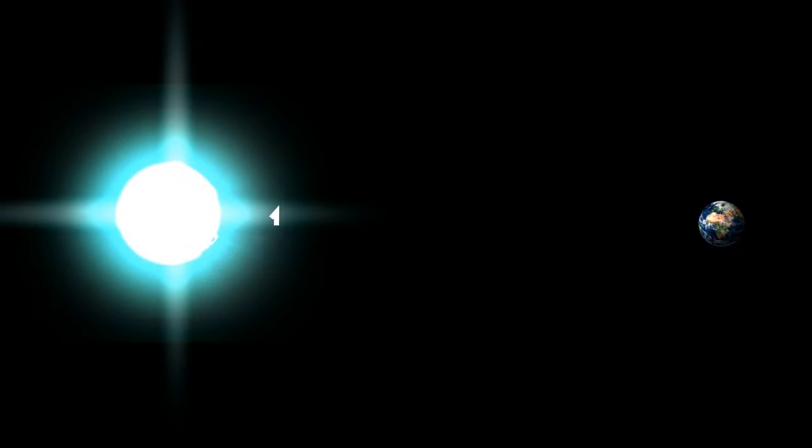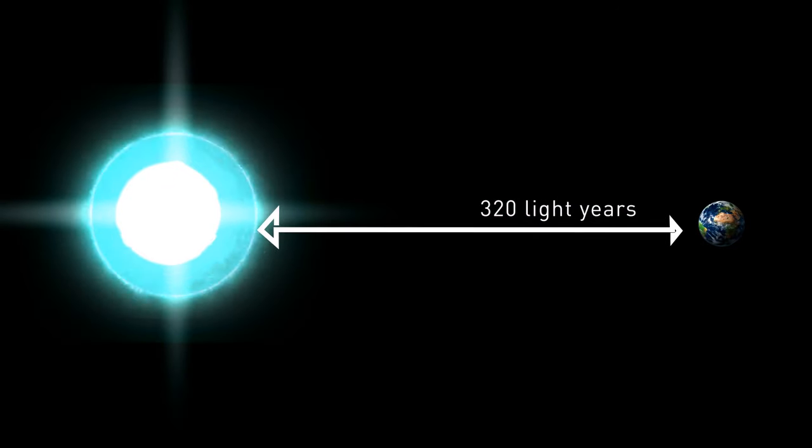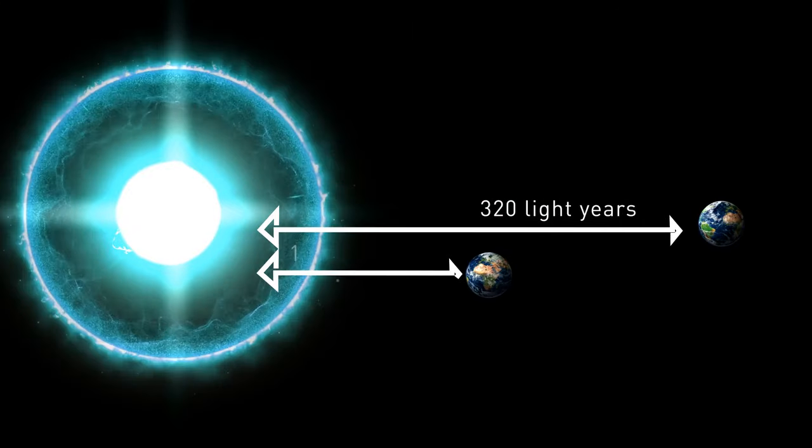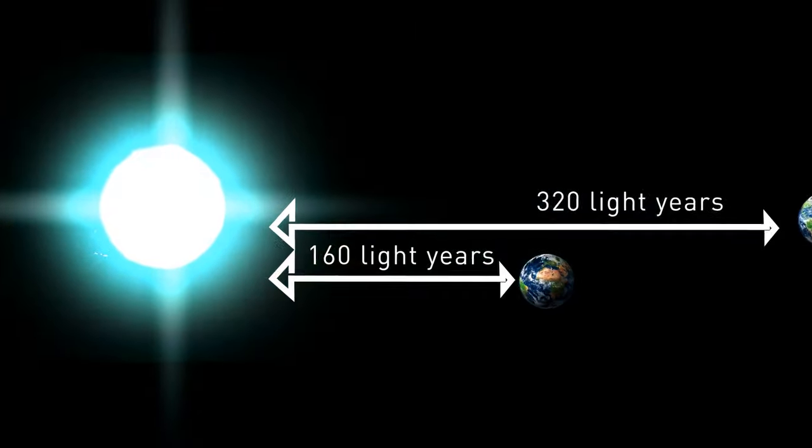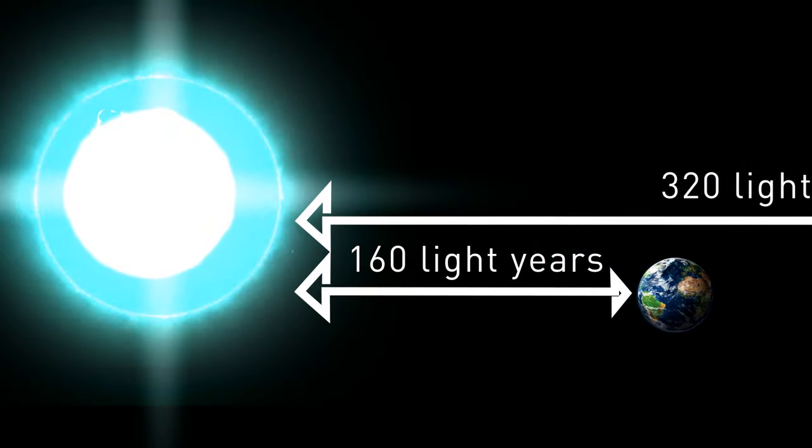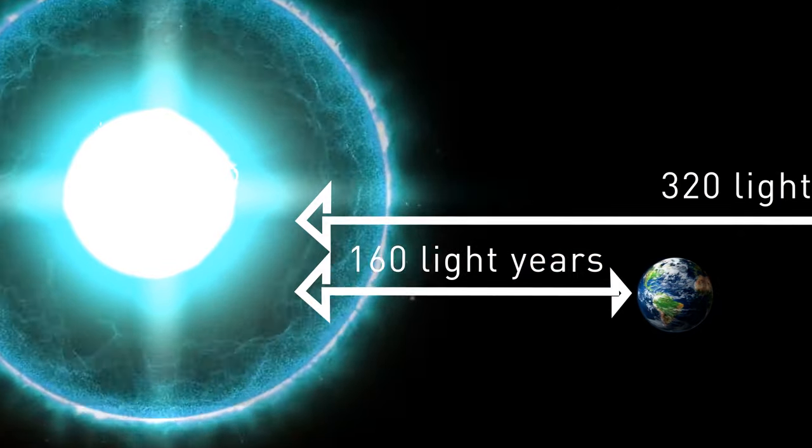Computer simulations show that a supernova 320 light-years from Earth wouldn't have any significant effects on our lives. But if a supernova was 160 light-years away, the enhanced stream of cosmic rays would hit Earth. And it would be 10 times more powerful than background levels. The effects would also last for centuries.